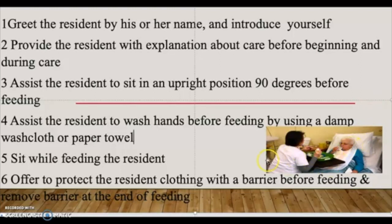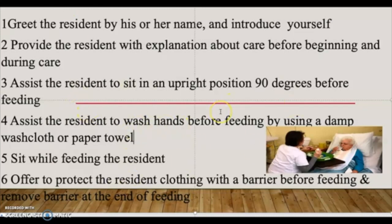Offer to protect the resident's clothing with a barrier before feeding and remove it at the end. They used to call it a bib, now they call it a clothes protector. Make sure you provide a clothes protector to protect their clothing. These are key elements in the skill that you need to integrate in order to be successful.